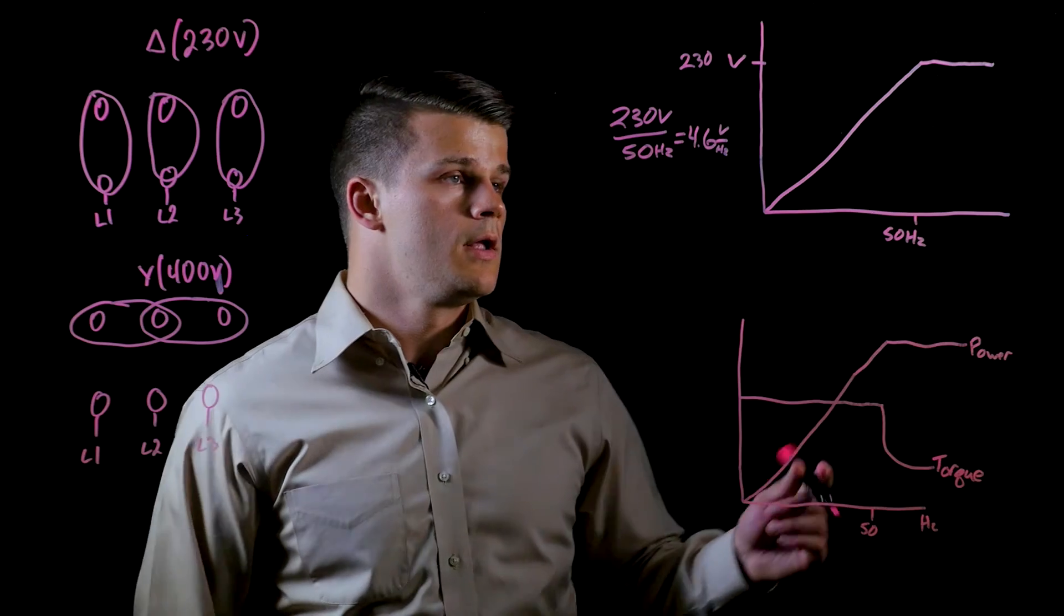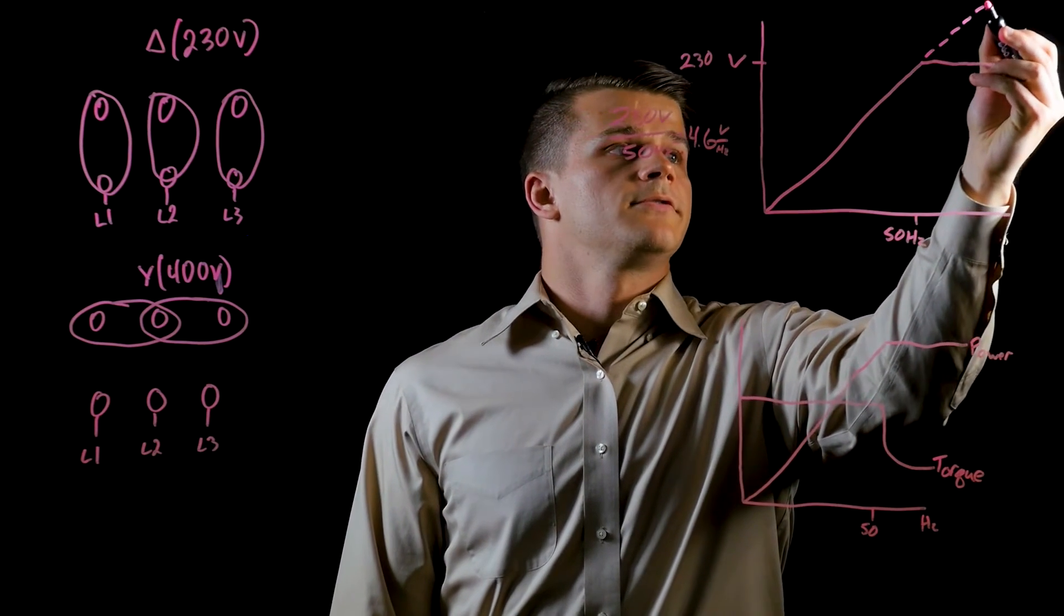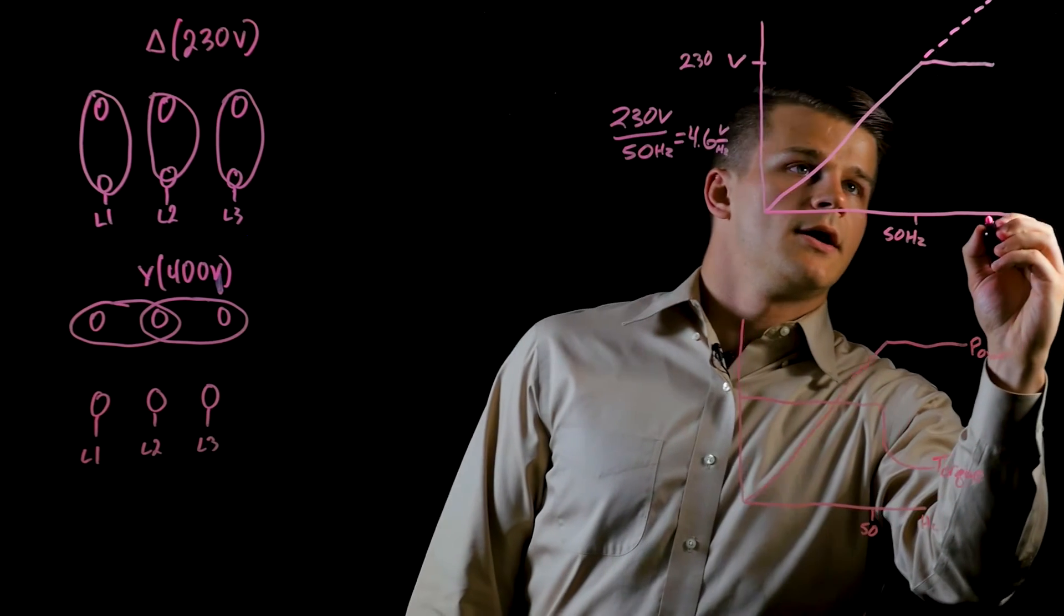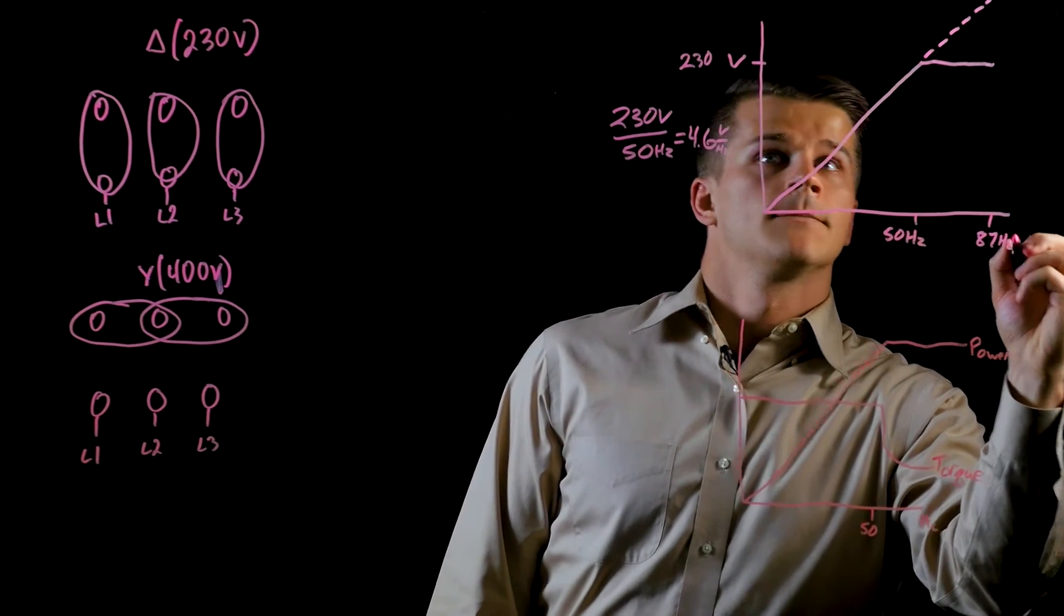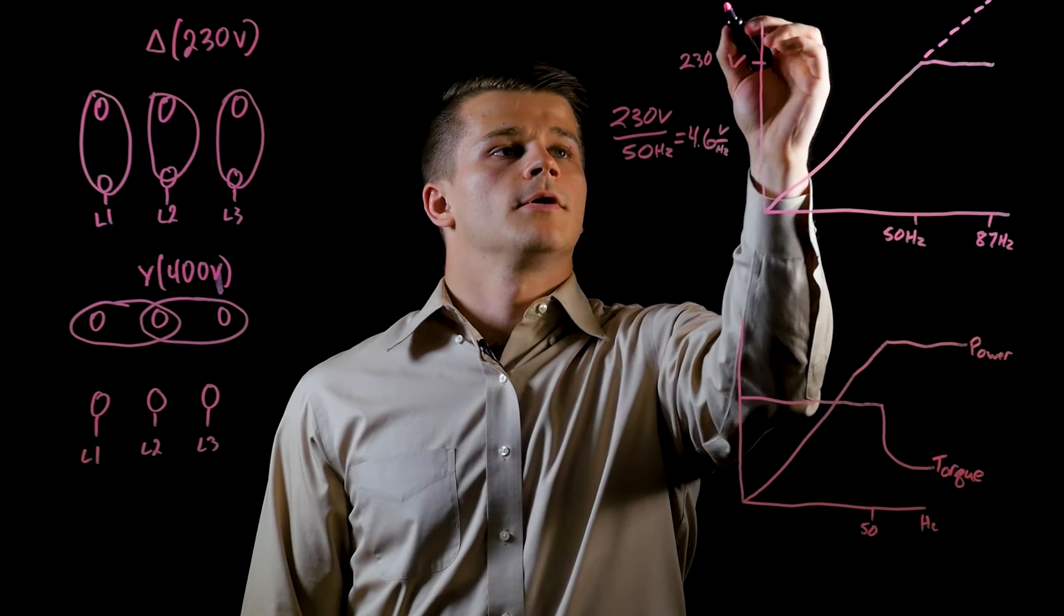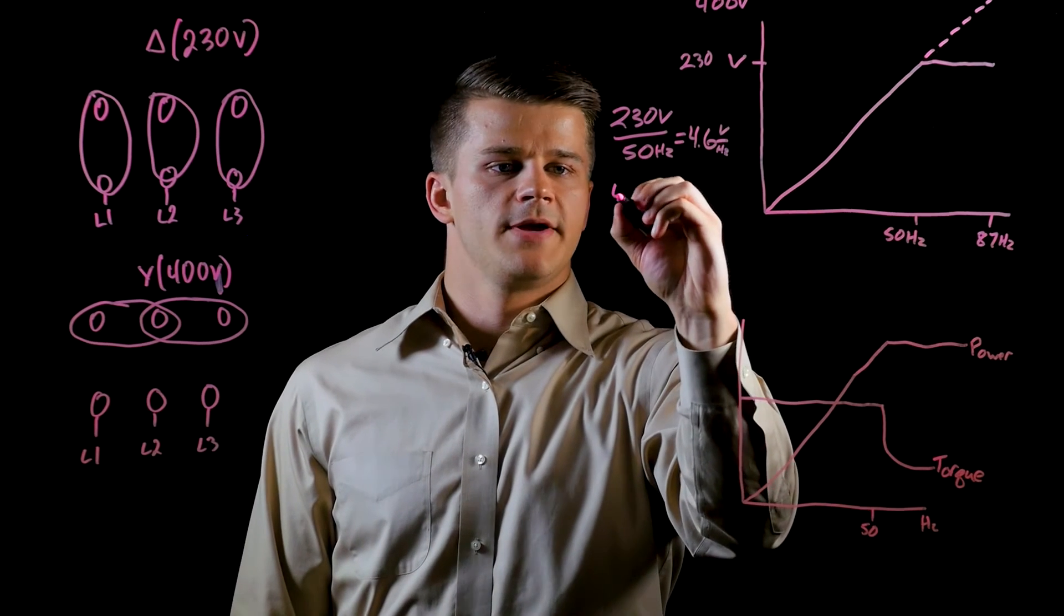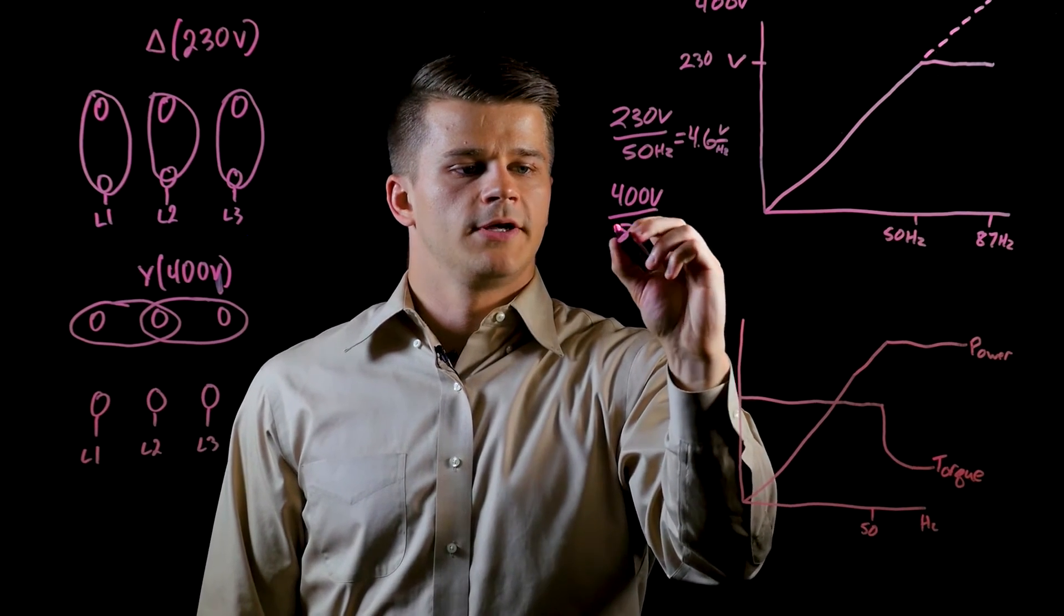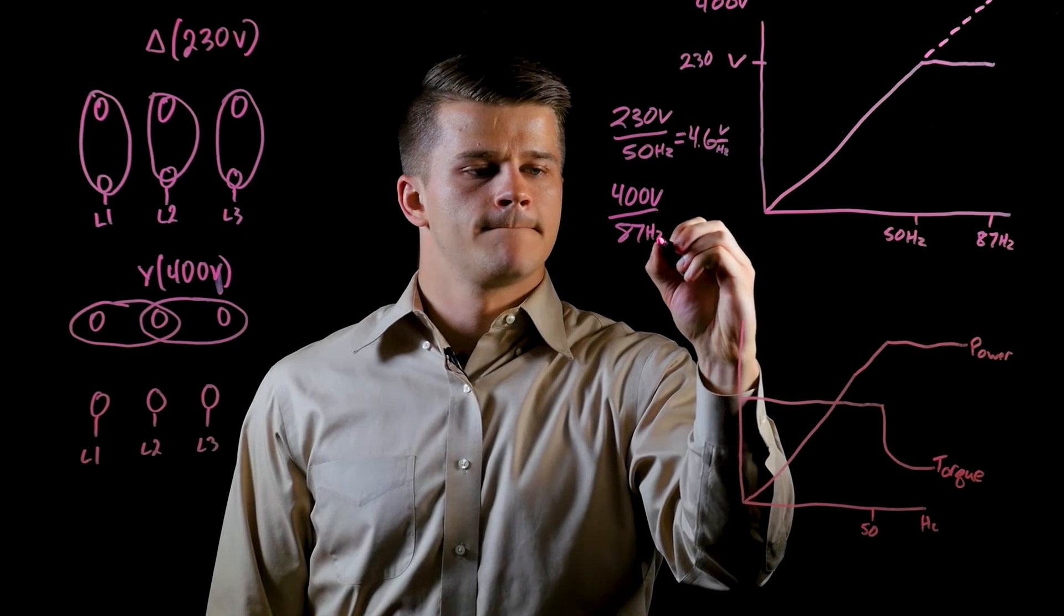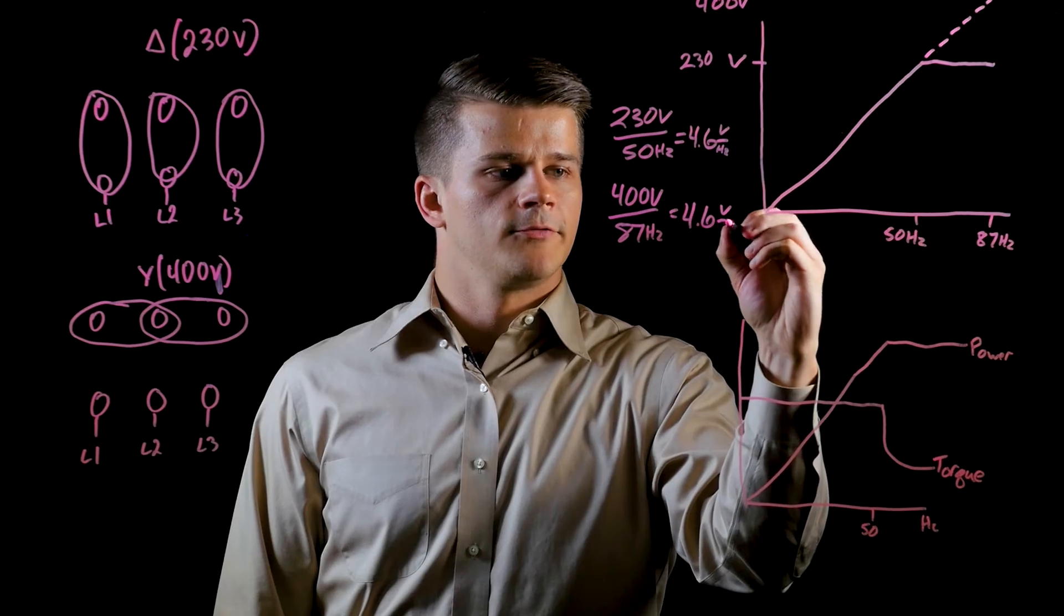If we imagine increasing this straight out to 87 Hertz, we go up to 400 volts. If we do the math again quickly, we have 400 volts over 87 Hertz, and that is the same 4.6 volts per Hertz.